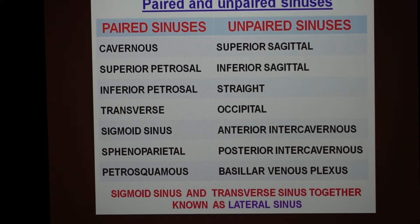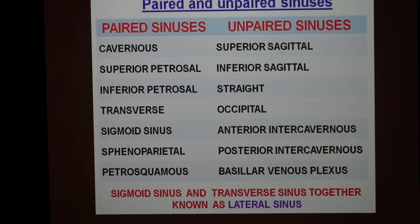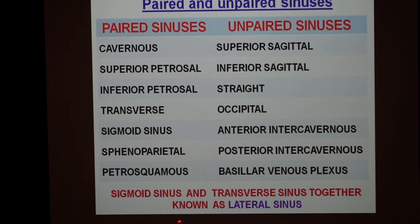These are the paired and unpaired venous sinuses present in the cranial cavity between the folds of the dura mater. Here is a very important one-liner which can be asked: the sigmoid sinus and the transverse sinus together are known as the lateral sinus.